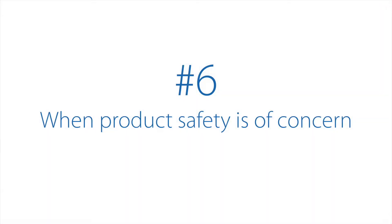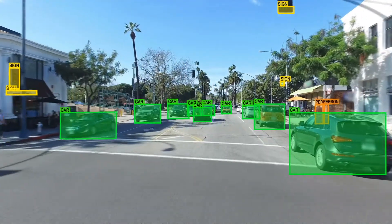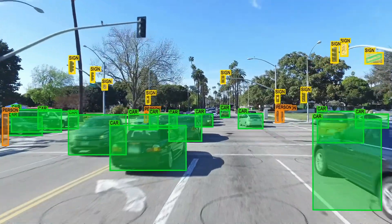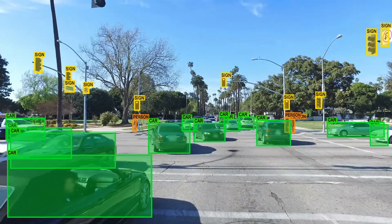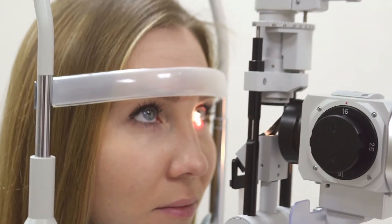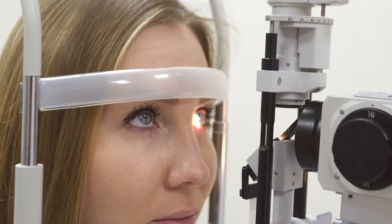Number six: when product safety is of concern. It's hard to bounce back if your product accidentally hurts people. Beyond the inevitable lawsuits, your reputation is forever lost. Safety-critical devices, such as in medical or military environments, must get it right the first time.